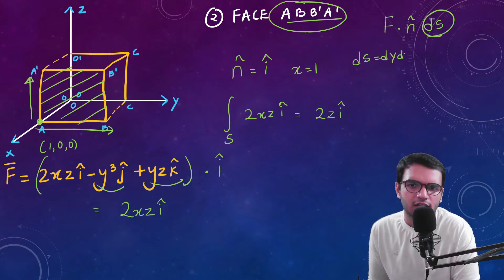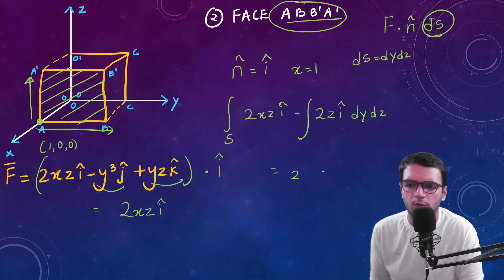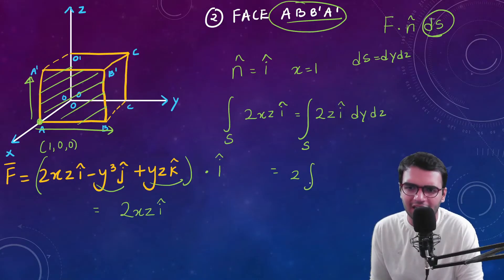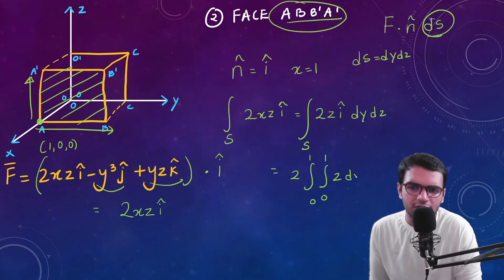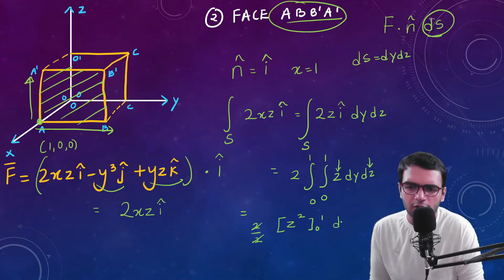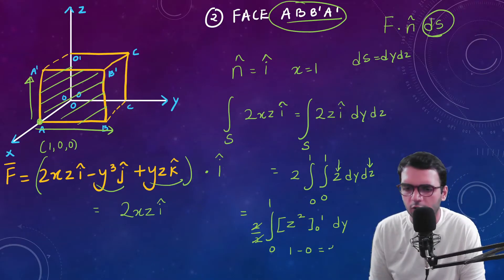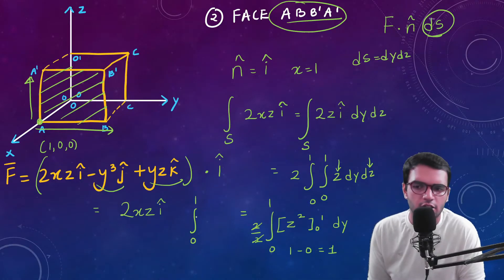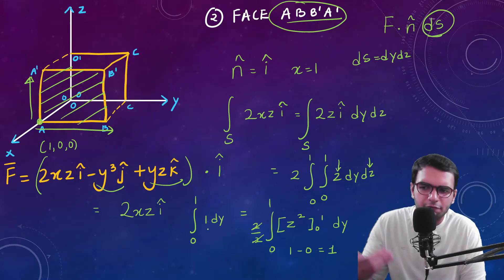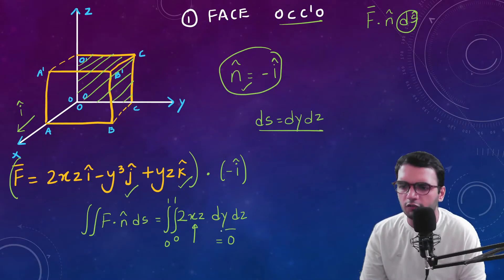The surface element dS on the front face is dy dz. So I integrate 2z dy dz from 0 to 1 in both variables. Integrating z gives z²/2, and the factor of 2 cancels the denominator. Applying limits 0 to 1 gives 1. The remaining integration over dy from 0 to 1 gives y evaluated as 1. So the front face contributes 1.